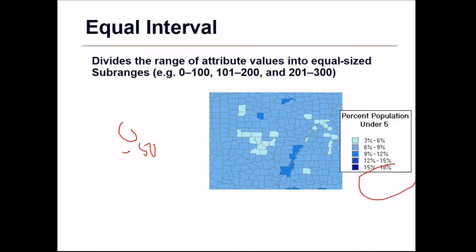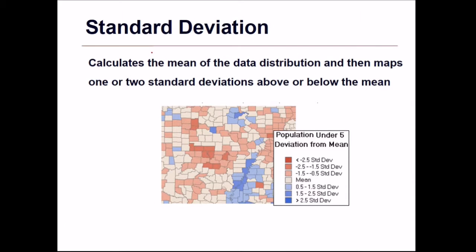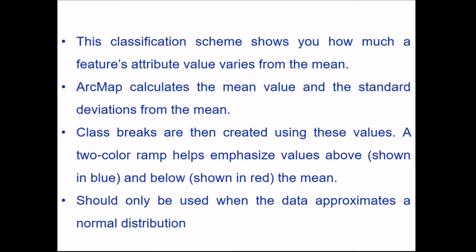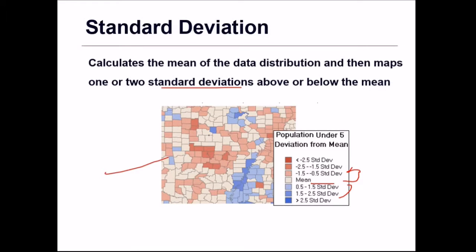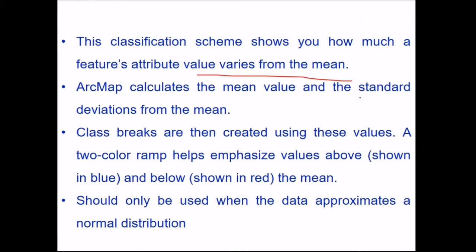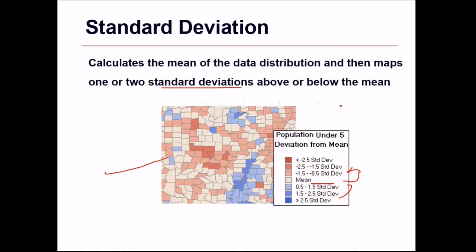Standard deviation classification calculates the mean of the data distribution and then maps one or two standard deviations above or below the mean. So the mean is at center, with values below and above mapped accordingly. This classification scheme shows how much a feature's attribute value varies from the mean. ArcMap includes the mean value and standard deviations from the mean to create class breaks, and a two-color ramp — such as blue and red — helps emphasize values above and below the mean.